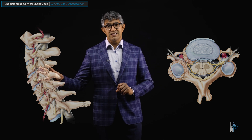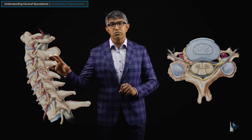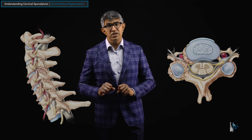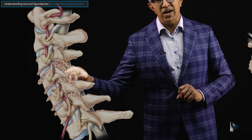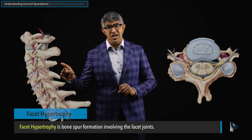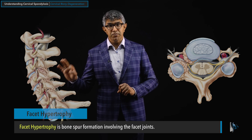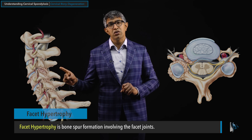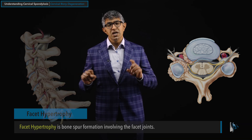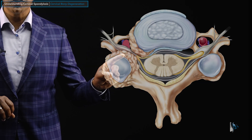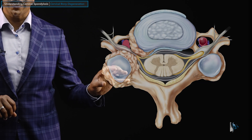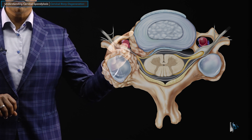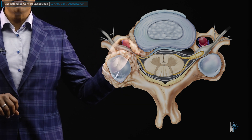When you look at this picture, you can see there's some arthritis involving the joints here. That is called facet hypertrophy — bone spur formation involving the facet joints. The other thing to talk about is uncovertebral hypertrophy. Facet hypertrophy is in the back part of the spine because those joints are in the back. Uncovertebral hypertrophy involves a joint or pseudo joint that's in the front part of the spine.